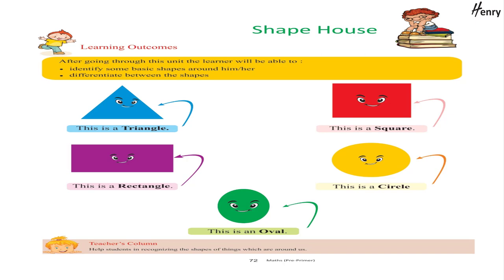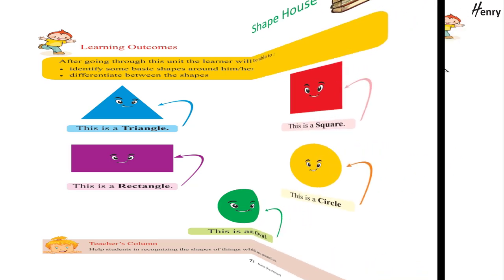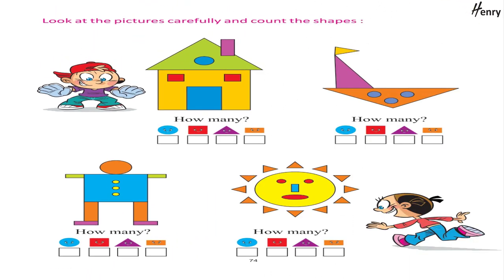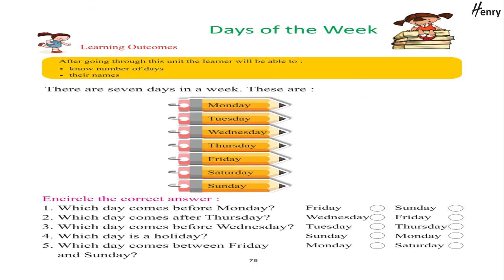Shapes: This is a square, this is a rectangle, this is a circle, this is an oval. Let's do — color the shapes, match, trace and color. Look at the pictures carefully and count the shapes.